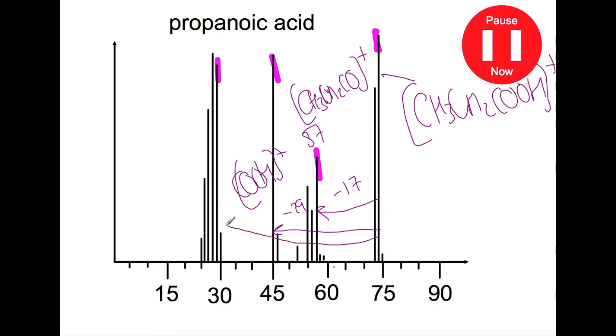And then the final one that we're going to look at is this one here at 29. So this is the opposite there, so this is minus 45. So where we fragmented off this group and we're left behind with the CH3 and the CH2 group.